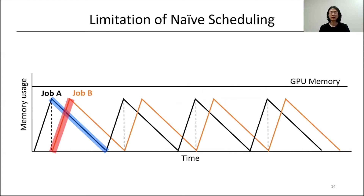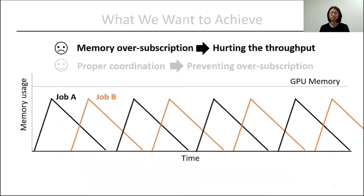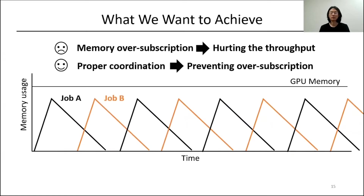For example, consider identical job collocation where the workload has a longer backward pass than forward pass. In this case, the naive scheduling will exceed GPU memory at a certain point, oversubscribing the memory and leading to significant performance degradation. To prevent memory oversubscription, proper coordination must make the overlap area smaller so that total memory consumption stays within the GPU memory budget.